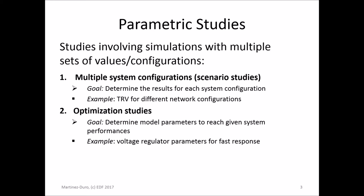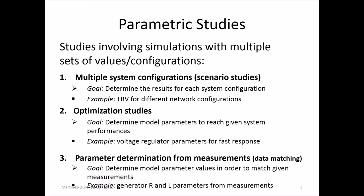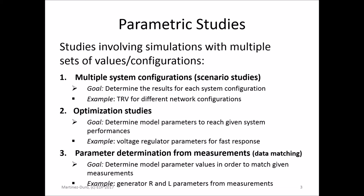You'll see one example of this kind with Emmanuel afterwards. The third type of parametric study is what we call data matching, or also parameter determination from measurements. The goal is to determine the model parameter values that allow you to match given measurements. For example, if you have measured the short circuit behavior of a generator, you may want to determine the resistances and inductances of your generator model in EMTP from these measurements. You will also see an example of this kind afterwards with Emmanuel.